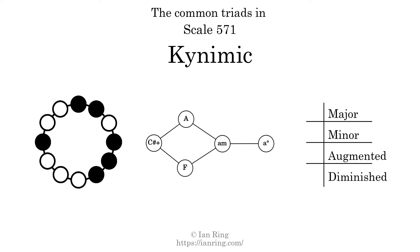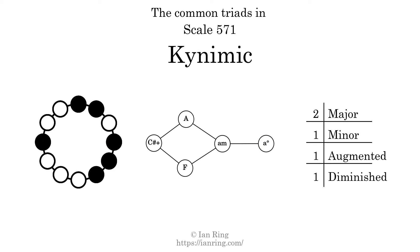Here are the common triads present in this scale. The diagram in the center is a graph of parsimonious voice leading between triads. There are two major triads, one minor triad, one augmented triad, and one diminished triad. Here is a Hamiltonian path of parsimonious voice leading that uses all the triads.